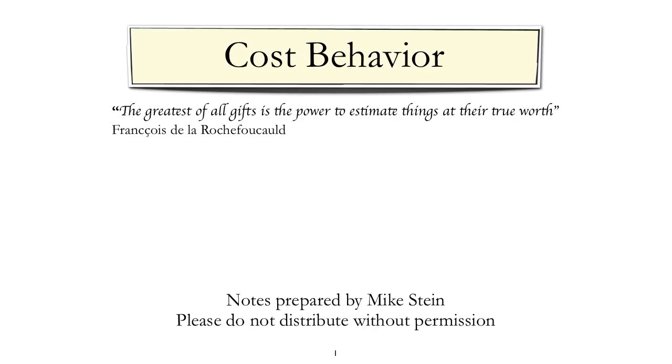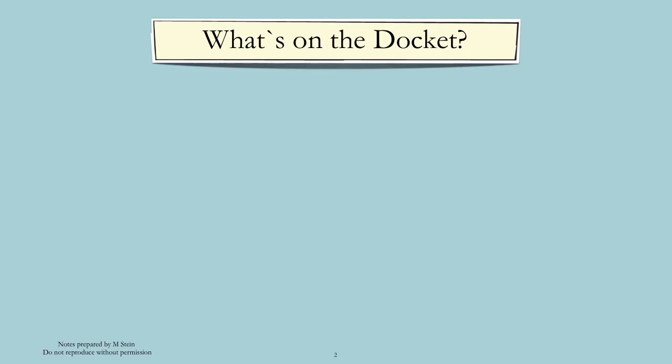The goal is to understand the relationship between quantity or volume of activity and cost. A typical approach to this problem is to identify fixed and variable costs over a range of activity. We start by describing the cost estimation problem, then we look at approximation methods such as the high-low method, linear regression, and finally we take a look at an application to operating costs.